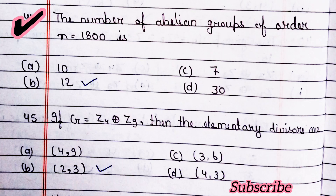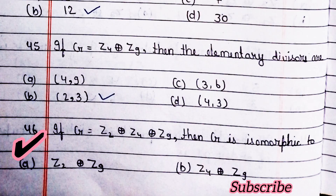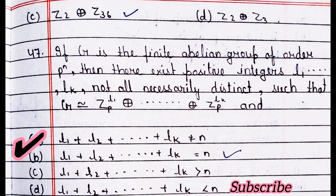Next question: the number of abelian groups of order 1800 is 12 — option B is right. Next question: if G equals this, then the elementary divisors are — option B is right. Next question: if G equals this, then Z is isomorphic to — option C is right. If G is a finite abelian group of order p^n, then there exist positive integers l1, l2, ..., lk not all necessarily distinct such that G equals Zpl1 direct sum ... direct sum Zplk — option B is right.